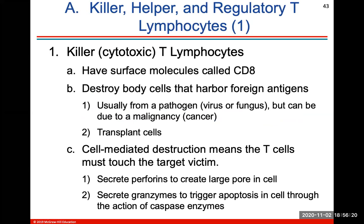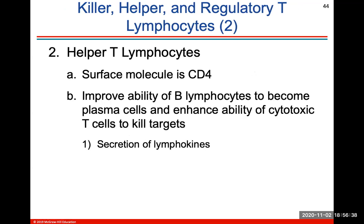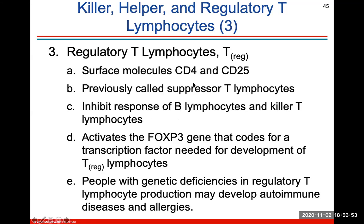Functions of T lymphocytes: killer T lymphocytes have a surface molecule called CD8, and they will destroy body cells that harbor foreign antigens. The cell-mediated destruction means T cells must touch the target victim. Helper T lymphocytes have the surface molecule CD4; they improve the ability of B lymphocytes to become plasma cells and enhance the ability of cytotoxic T cells to kill their targets. Regulatory T lymphocytes help regulate and inhibit responses of B lymphocytes.